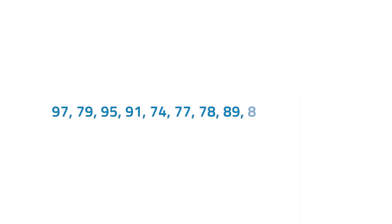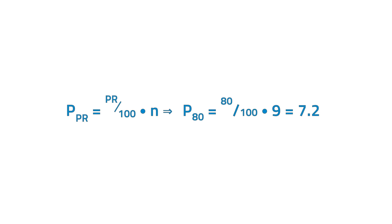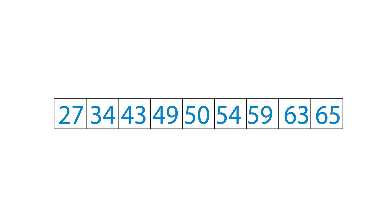Let's try this example. Determine the lowest 80% in the distribution of mathematics ratings in a grade 10 class. The lowest 80% is P80, which is also equal to D8. Round up 7.2 to the nearest integer, which is 8. Thus, P80 is the 8th value. From the ranked data, 63 divides the distribution into two parts: the lowest 80% from the highest 20%.